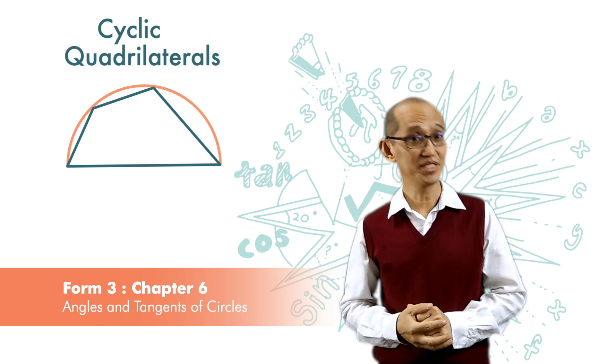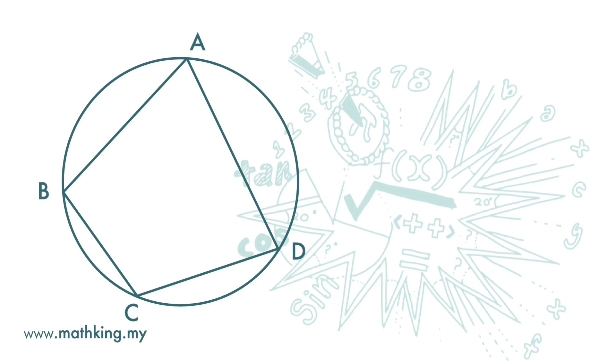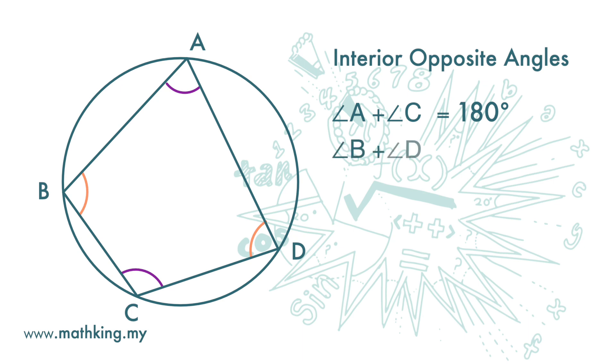A cyclic quadrilateral has four angles. The angle at A and the angle at C are called interior opposite angles, and when we add up angle A and angle C we get 180 degrees. Angle B and angle D are also interior opposite angles, and when we add up angle B and angle D we get 180 degrees.